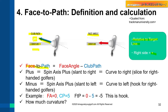Face-to-path is face angle minus club path — red minus blue. When this value is plus, spin axis is plus, meaning the axis is slanted to the right and the ball curves to the right.